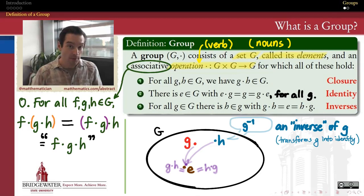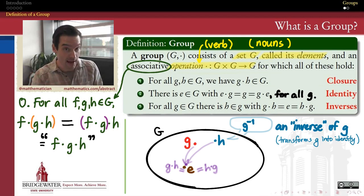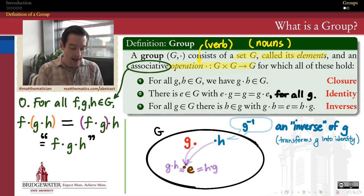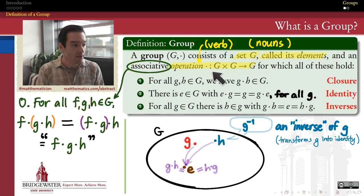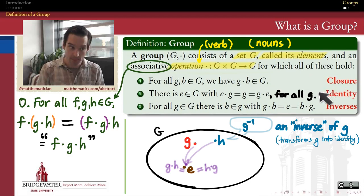Now that we've seen what the definition of a group is in abstract algebra — that it consists of a set of elements, think of them as the nouns, and a binary operation, think of it like the verb in this system — and that operation must be associative, it must have the closure property, the identity property, and the inverses property.